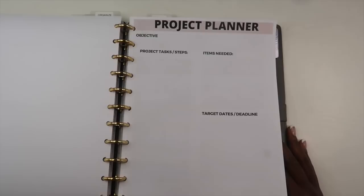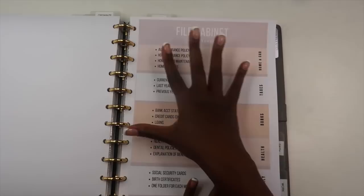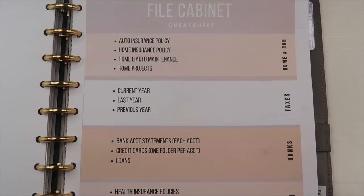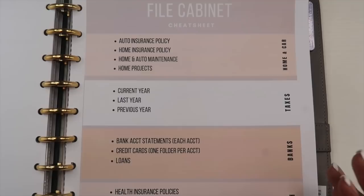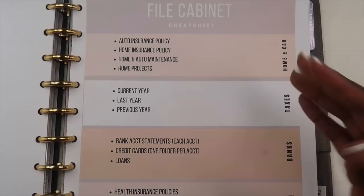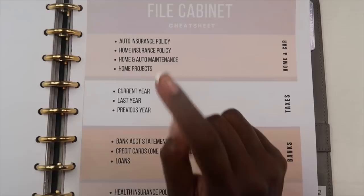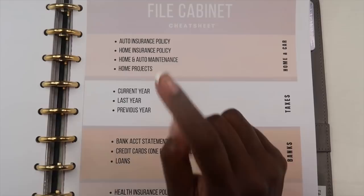The very next page under my home organization section is my file cabinet cheat sheet. I created this because I don't like to store a lot of paper — if paper comes into my house I try to get rid of it as quickly as possible. But there are areas I absolutely need to keep, and I wanted a spot in my planner to jot that down. We have five sections and the first is for home and car.